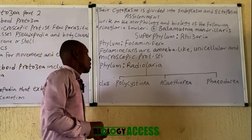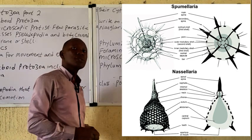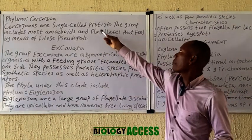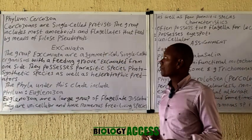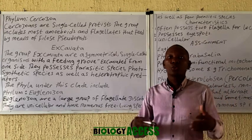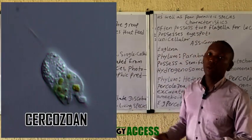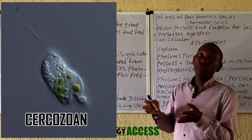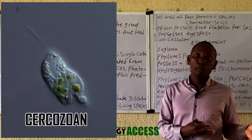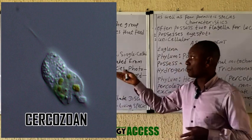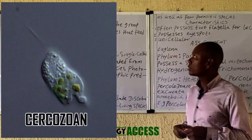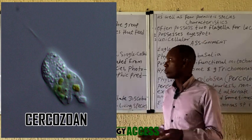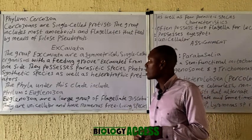The next phylum is the phylum Cercozoa. They are single-celled protists; the group includes most amoeba and flagellates that feed by means of filopodia pseudopodia. In some cases this group is divided based on whether their pseudopodia develop into filopodia or reticulopodia. From the diagram of the cercozoa on the board, you can see that they do not have a cytostome.